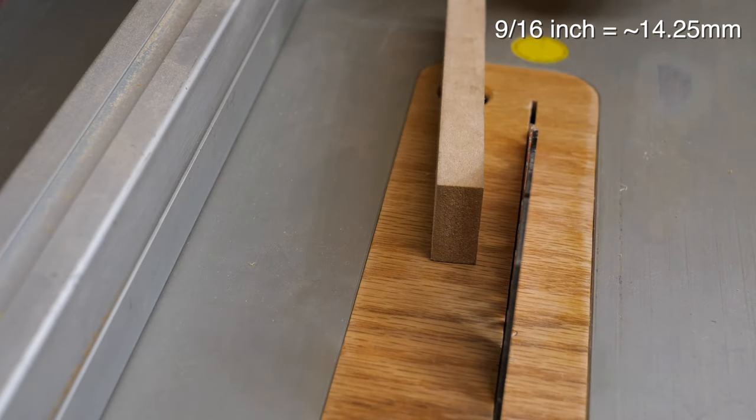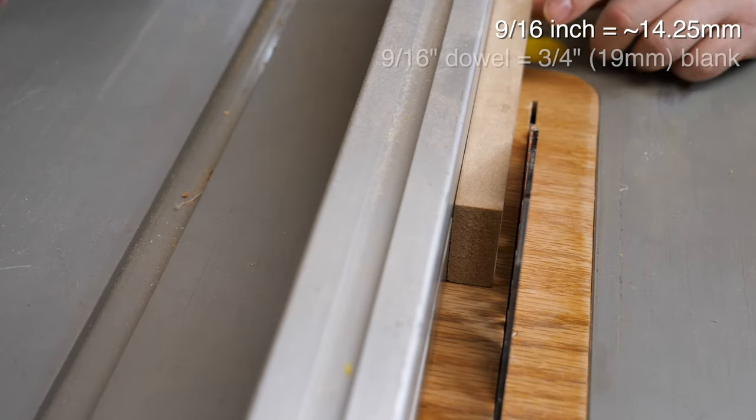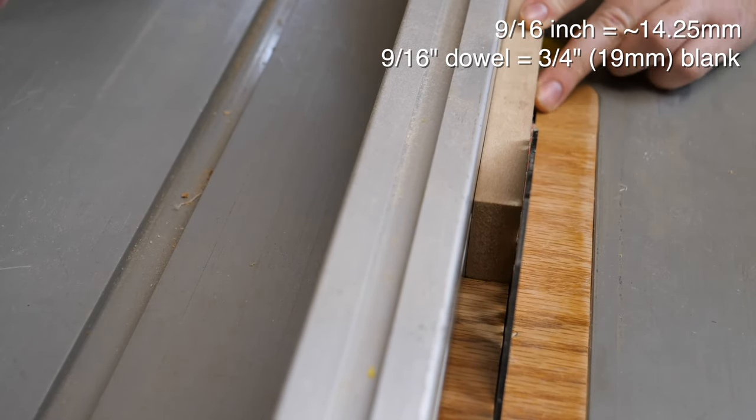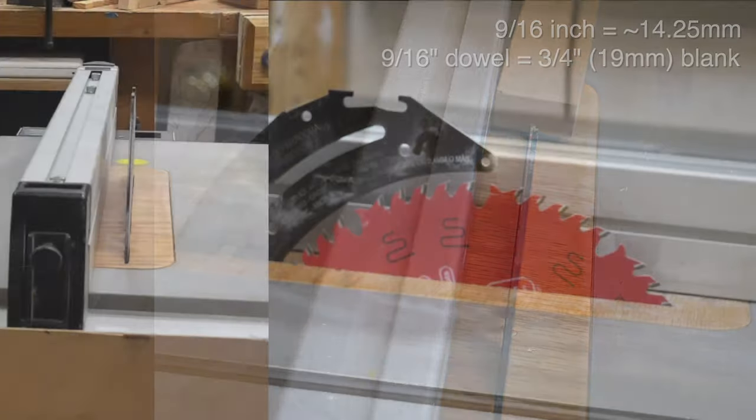I like to make a 9/16 inch stick, which requires a 3/4 inch blank. Using a 3/4 inch piece of MDF makes setting up my table saw for this super simple.